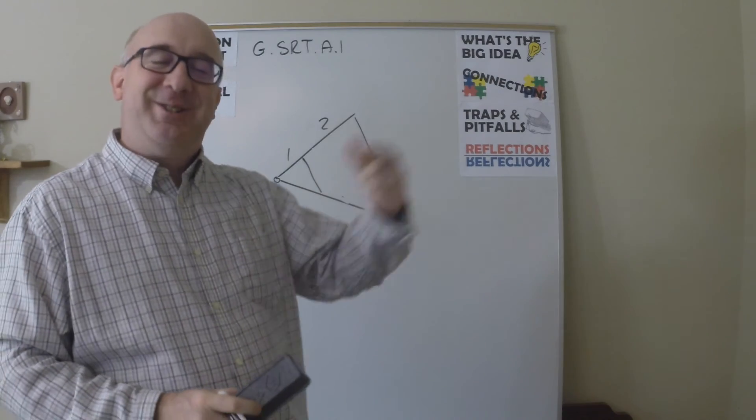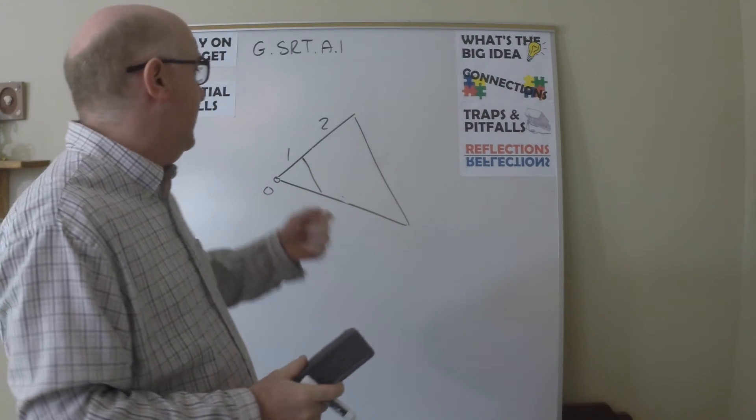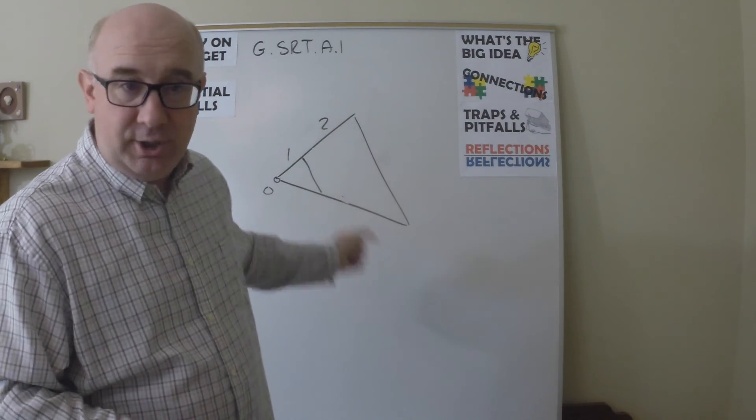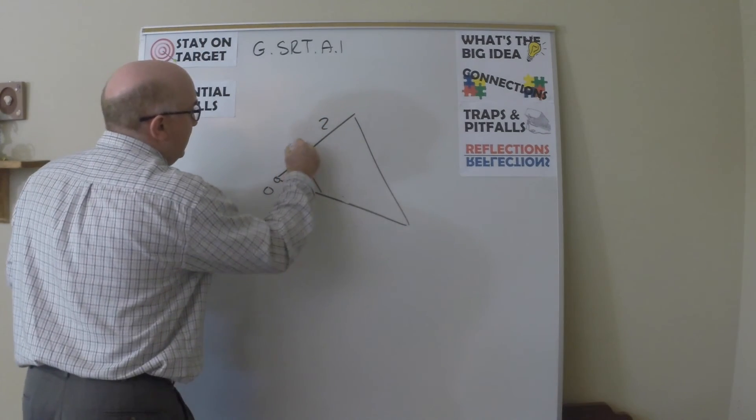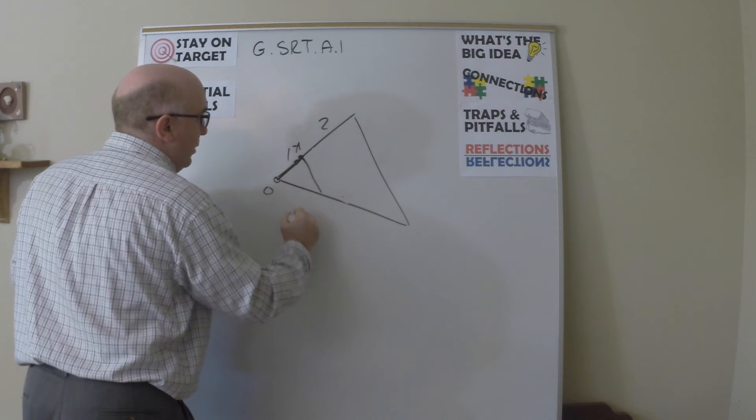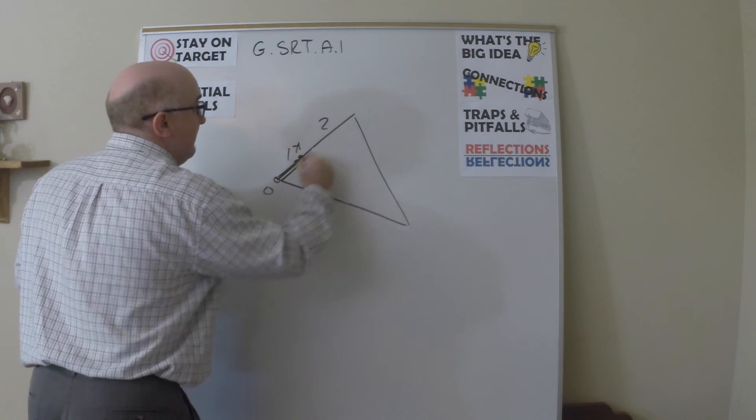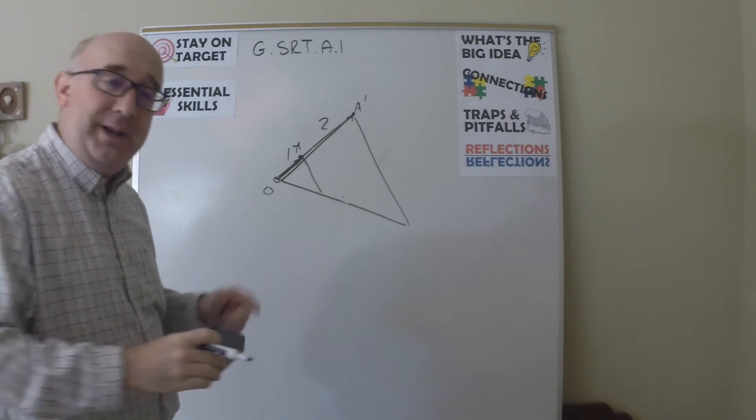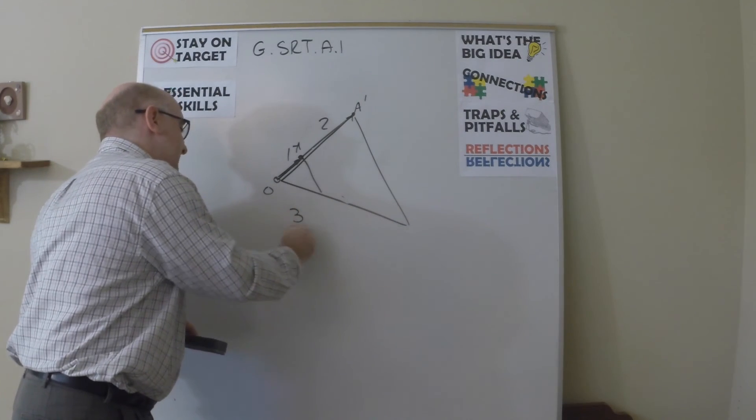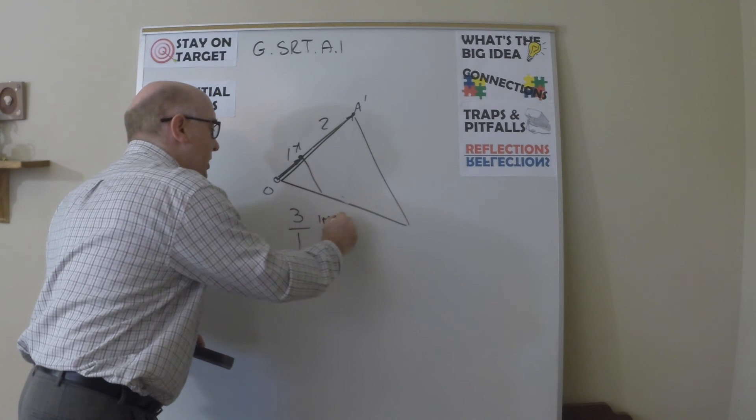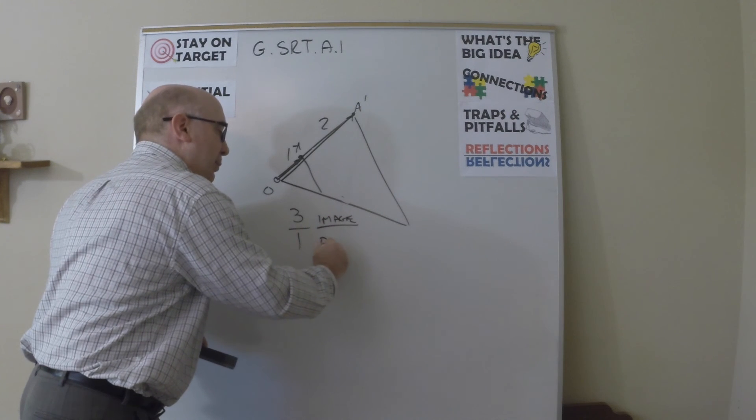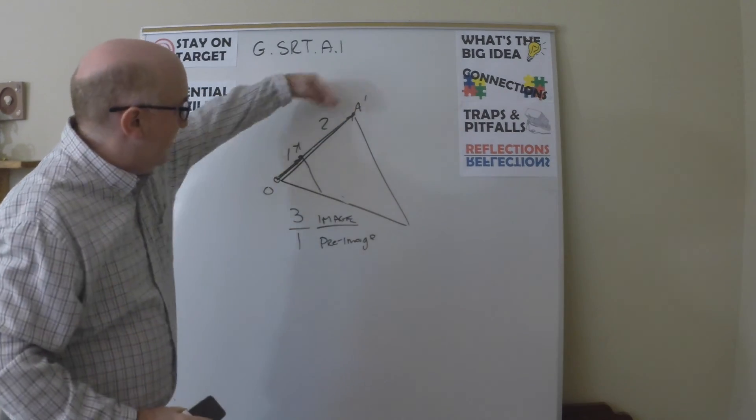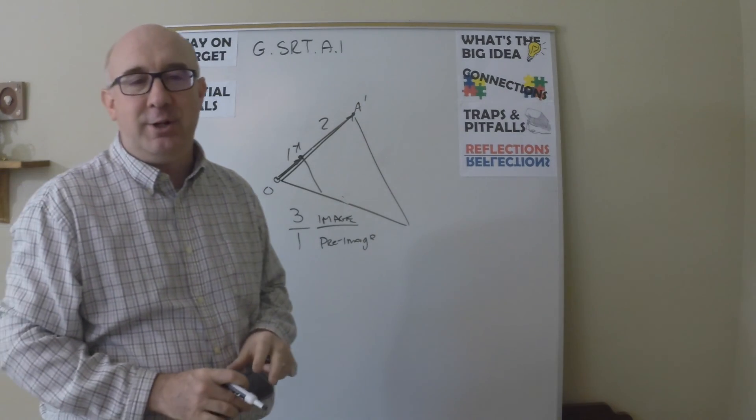Students want to say that this is a one to two ratio or it's a dilation of two because they see the one and the two. But again, it's always about the distance. Here is a one, the initial distance, and the final distance of A prime is a three, so that's a three to one. It's always image over pre-image is the scale factor. So three is to one. A good objective though.